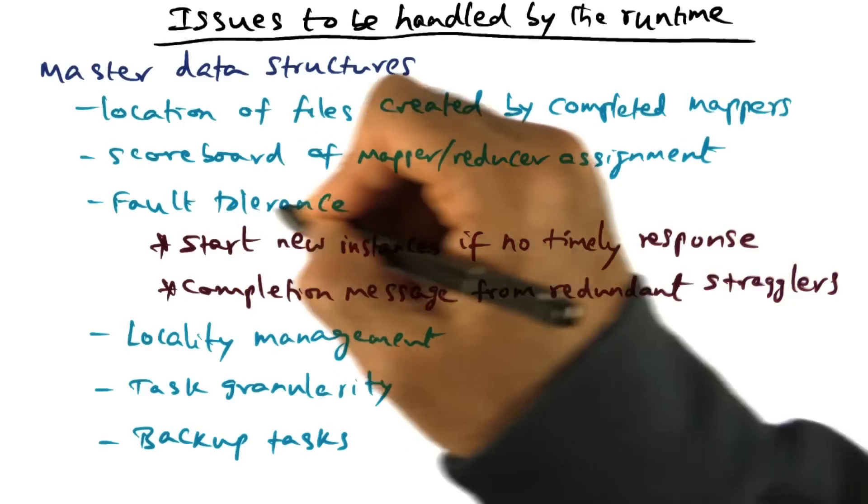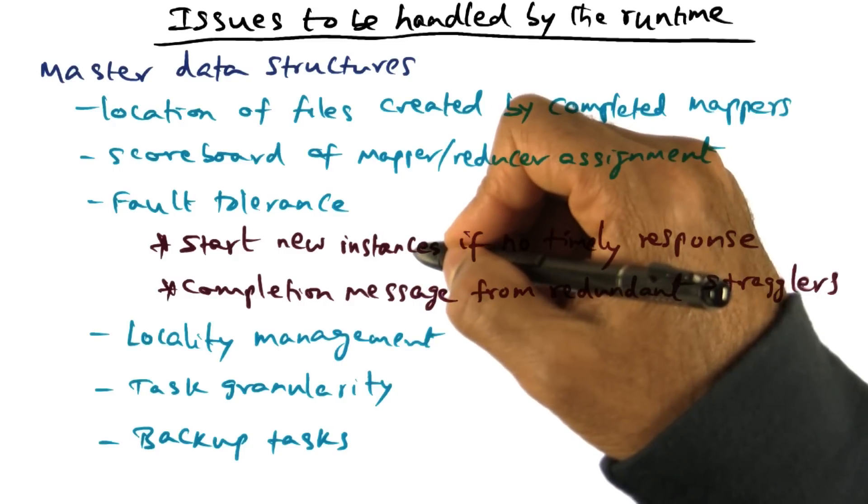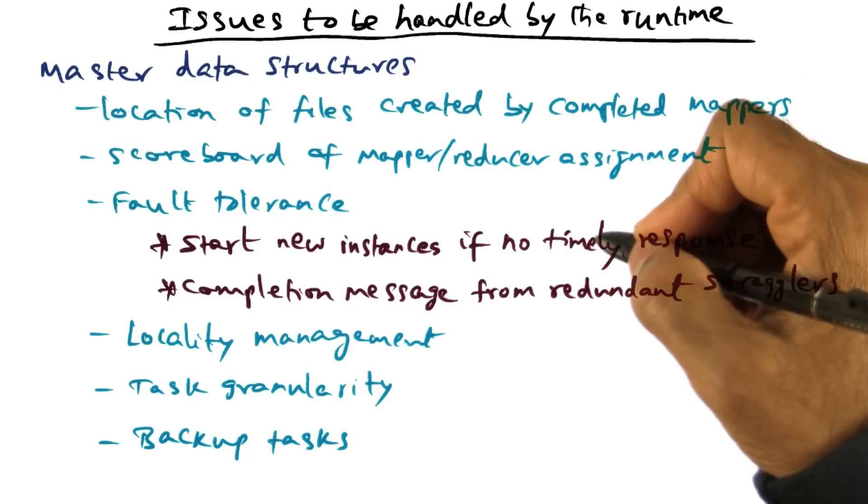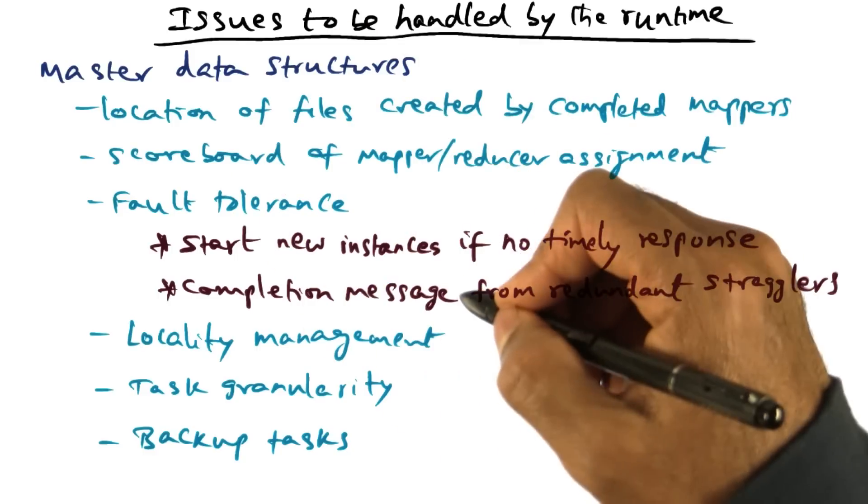Then the big thing is fault tolerance. For a variety of reasons, the master may find that an instance of a map function that it started is not responding in a timely manner. Maybe that node is down for some reason, maybe the link is down for some reason, or maybe that processor is taking a little bit more time than what the master expects.